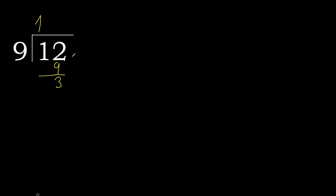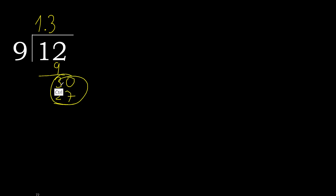Next. There is no number, therefore complete — always complete with 0 here. Point. 0 point. 30. 9 multiplied by 4 is greater. Multiplied by 3 is 27. Subtract.